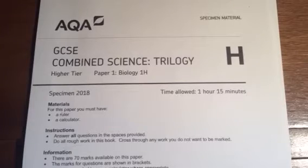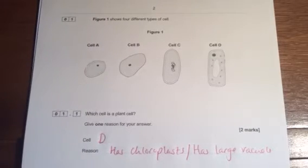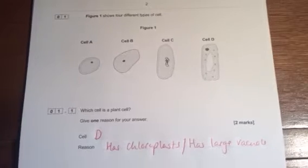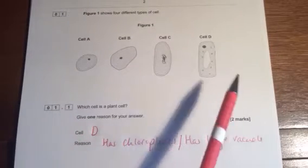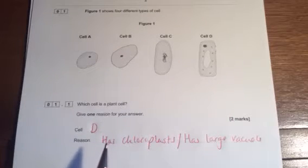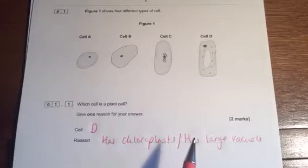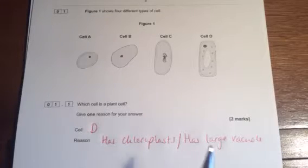Biology paper one higher. Figure one shows four different types of cell. Which cell is a plant cell? Give one reason for your answer.